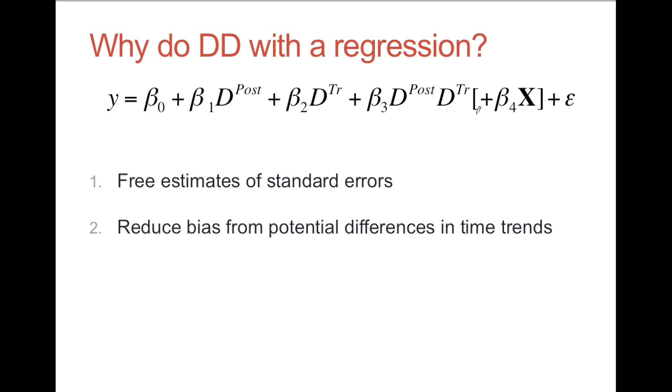Second, we can add additional controls. That's what these X's are. If the trends in the treatment and control areas unrelated to the program are different because of differences in observed characteristics, for example socioeconomic status, we can control for these differences and still get an unbiased estimate of the program effects.